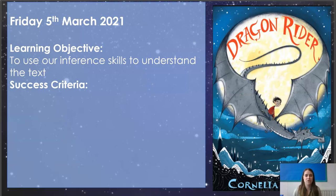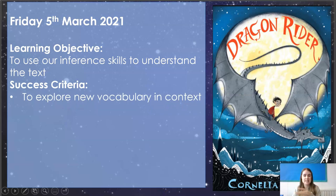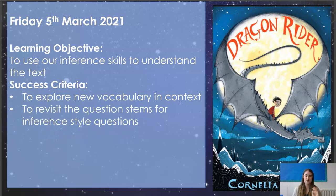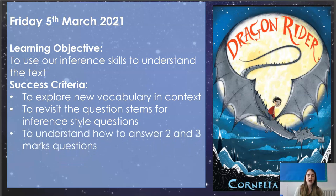We're going to finish it off by looking at using our inference skills to understand the text. As usual, we're going to look at the new vocabulary, similar to how I did it for our lesson on Tuesday — when I pull up a specific word that we're going to look at on that page, I'll bring it up alongside it and we'll read through it that way. We're going to revisit the question stems for inference style questions, because it's been a long time since we've actually considered the different types of questions. We're then going to have a go at understanding how to answer two and three mark questions.